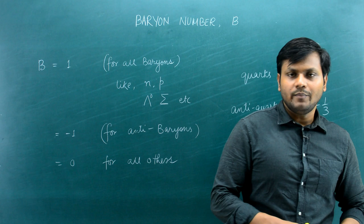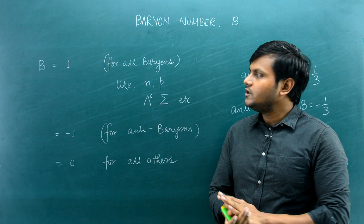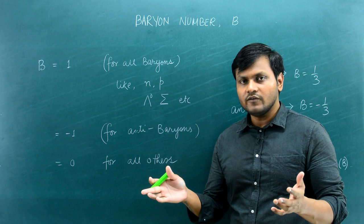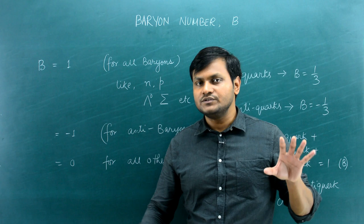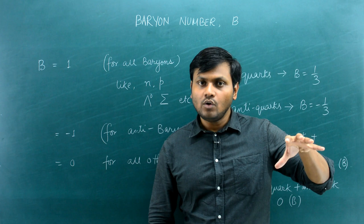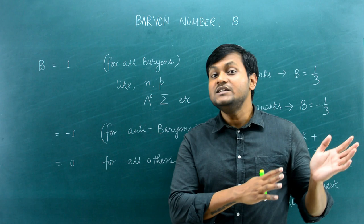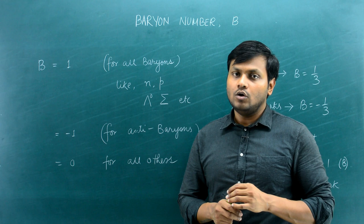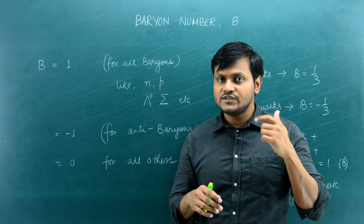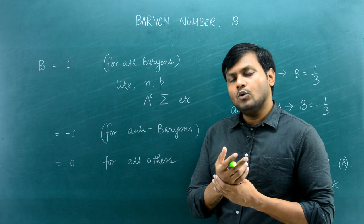Now let's move to the next quantum number: the baryon quantum number. Baryon particles are essentially particles that consist of three quarks. As opposed to leptons, there is a class of particles called hadrons which do experience the strong force. Hadrons can be further classified into baryon particles and meson particles.